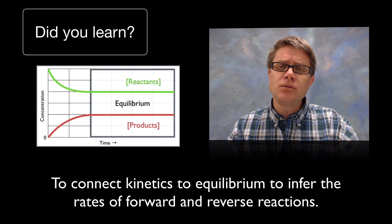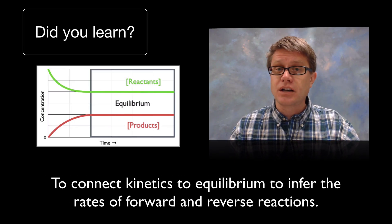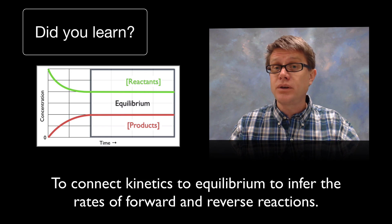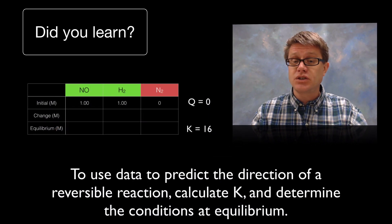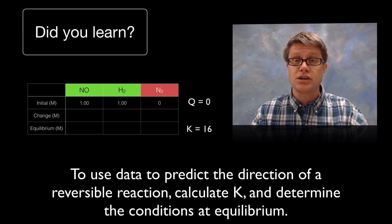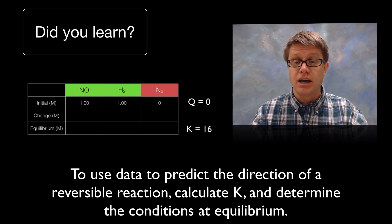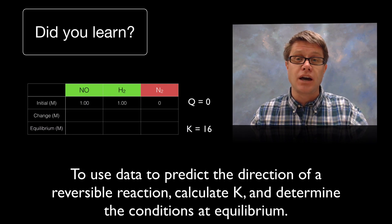So: can you read graphs to determine based on concentrations of reactants and products whether we've reached equilibrium, and if not, which way we have to go? Can you use data to predict the direction of the reaction — left to right, right to left, or at K? Can you calculate K, and then determine conditions at equilibrium given K? I hope so, and I hope that was helpful.